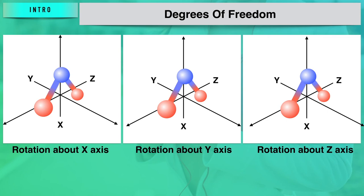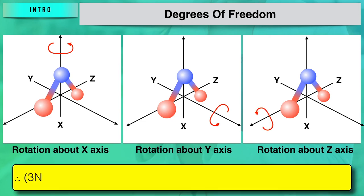A non-linear molecule like methane, which has a tetrahedral arrangement, is free to rotate about the x-axis, y-axis, and z-axis. So a non-linear molecule, in addition to 3 translational degrees of freedom, also has 3 rotational degrees of freedom. To find vibrational degrees of freedom for non-linear molecules, we subtract 6 from 3n — 3 for translational and 3 for rotational — giving the formula 3n minus 6.